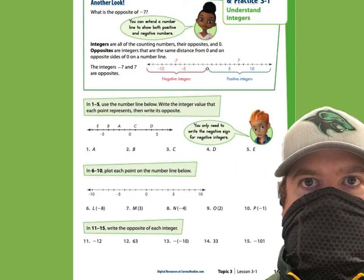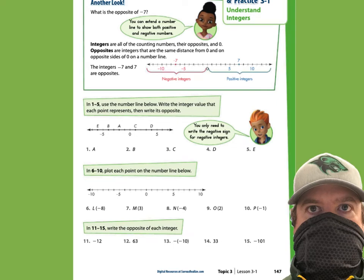Let's all look at page 147. Quick review: integers are the counting numbers — they include their opposites and zero. Today we learned that opposites are integers that are the same distance from zero and on opposite sides of the number line. For example, 7 and negative 7 are opposites — same digit, on opposite sides of zero, both the same distance of seven from zero.